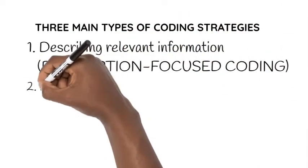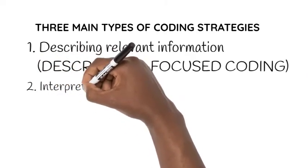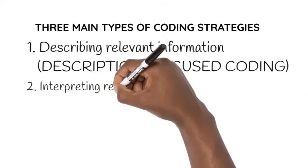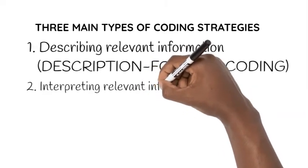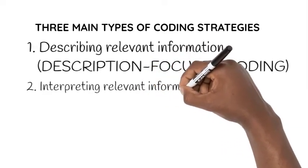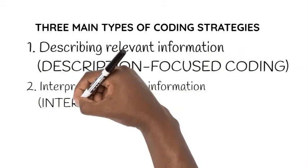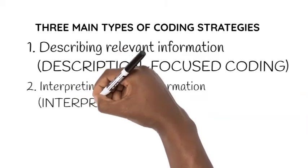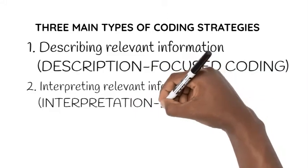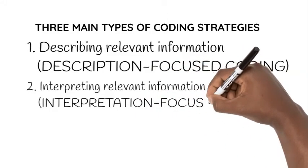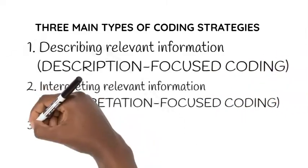Then we have interpretation-focused coding. This is where, when you identify significant information, you first interpret or make sense of it. How do you make sense? You have to consider the intent and background of the participant that will help you better understand what the person is telling you. Then based on that, you develop labels to represent that significant information and make sure that the label is helping you indirectly address the research question.